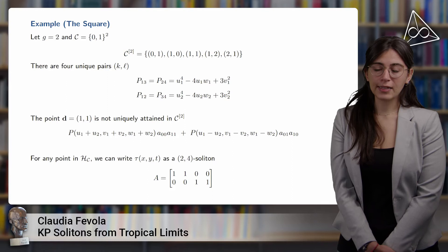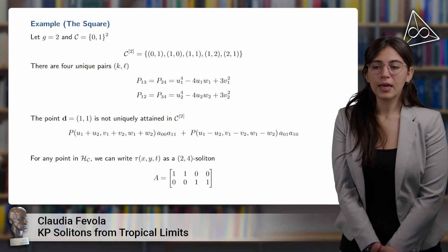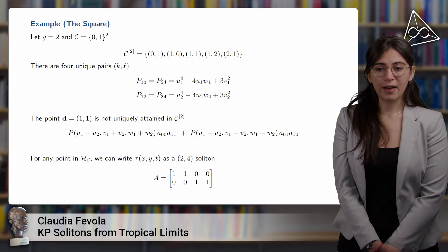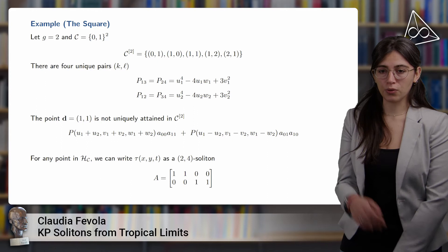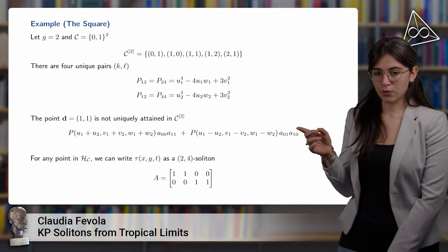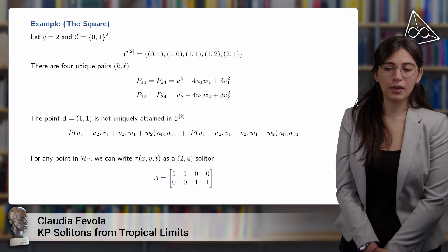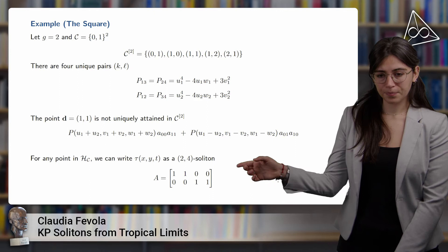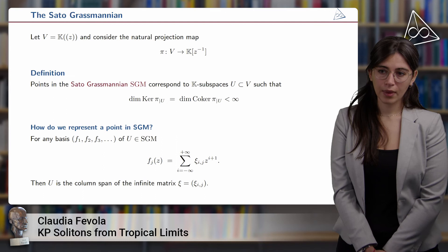As an example, when G = 2, a possible Delaunay set is the square. In this case, the set C_2 consists of five pairs, of which four are uniquely attained and contribute these polynomials, while the point (1,1) is not uniquely attained and contributes with a different polynomial. For any point in the Hirota variety associated to such a Delaunay set, we can write the tau function as a 2-4 soliton given by this matrix in the Grassmannian Gr(2,4).